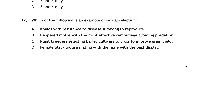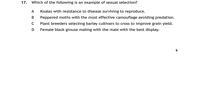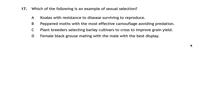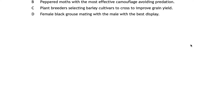Question seventeen on sexual selection is no longer in the Higher Biology course as of 2022, so don't worry about it. For those curious, sexual selection is the selection of traits concerned with increasing mating success. The answer would be D — a female grouse mating with a male with the best display. Things like koalas having disease resistance and surviving to reproduce are natural selection, not sexual selection. Skip question seventeen when keeping score.